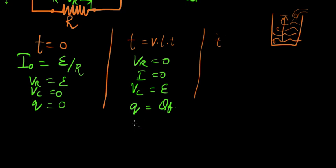Q final can be also written as what? We know that the charge in the capacitor equals capacitance times the voltage. So Q final can be written as C times E.